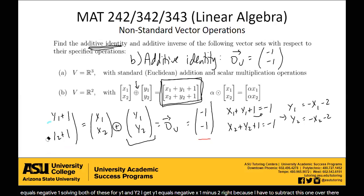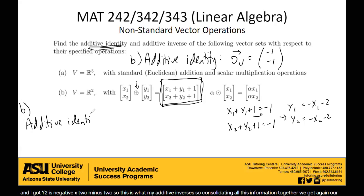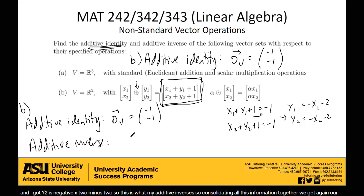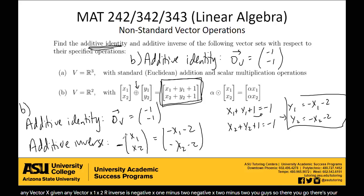Consolidating all this information: our additive identity, the zero vector for Part B, is negative 1, negative 1. Our additive inverse, given any vector x1, x2, is negative x1 minus 2, negative x2 minus 2. Note that in order to calculate the additive inverse, we needed to first calculate the additive identity. So if they ever ask you to find the additive inverse, you need to first find the additive identity.